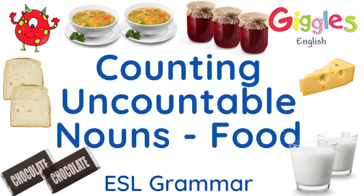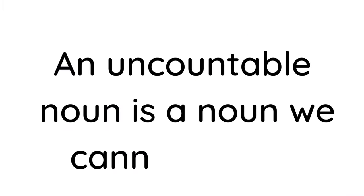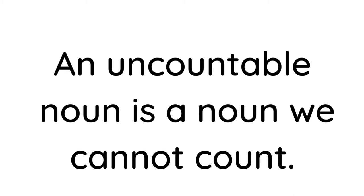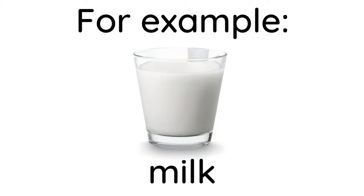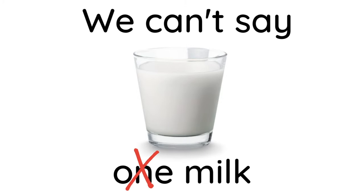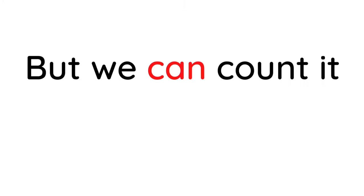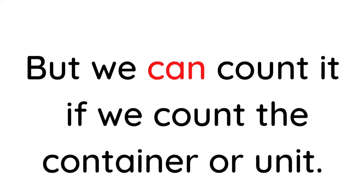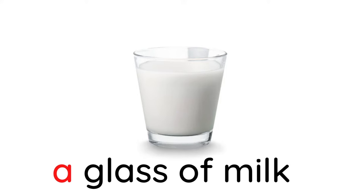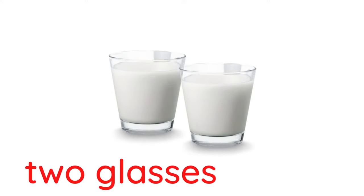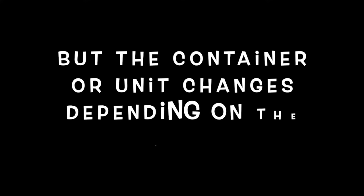Counting uncountable nouns. Food. An uncountable noun is a noun we cannot count. For example, milk. We can't say 'one milk,' but we can count it if we count the container or unit. A glass of milk. Two glasses of milk. But the container or unit changes depending on the food. Here are some examples.